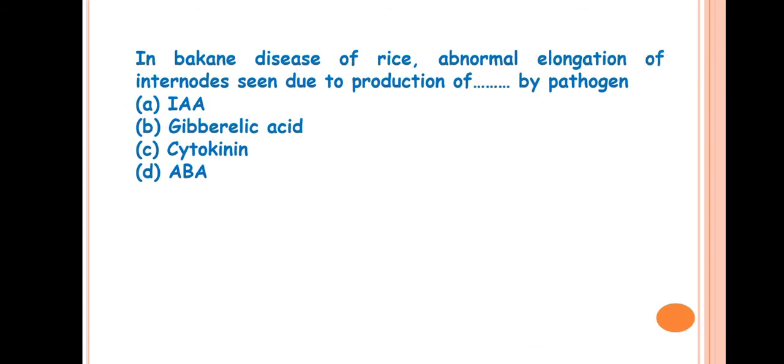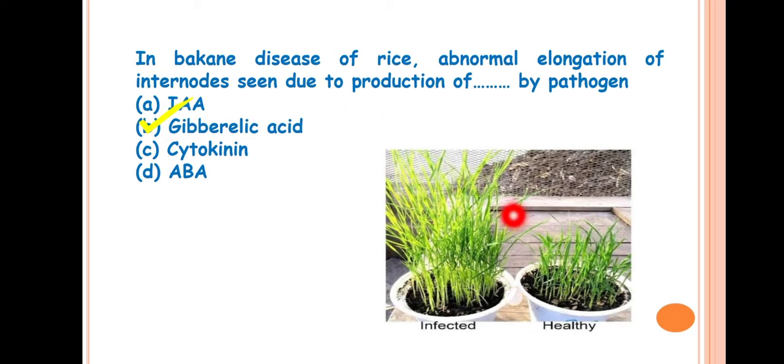Next, in Bakanae disease of rice, abnormal elongation of internodes seen due to production of dash by the pathogen. Answer is B, Gibberellic acid or GA. It leads to the elongation of cell. And this Bakanae disease is caused by the pathogen Fusarium moniliforme. It produces the gibberellic acid due to which abnormal elongation of internodes occurs in rice plant.